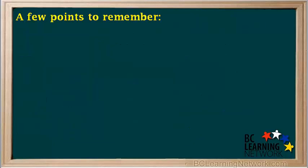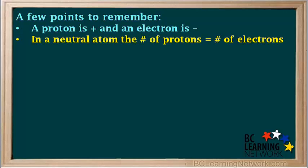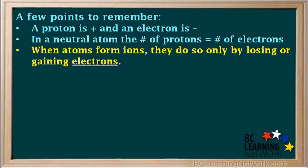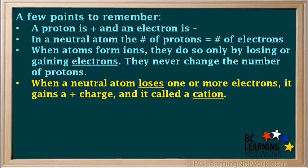Here are a few points to remember about ions. A proton is positive and an electron is negative. In a neutral atom, the number of protons is equal to the number of electrons. When atoms form ions, they do so only by losing or gaining electrons — they never change the number of protons, as this would change the identity of the element.